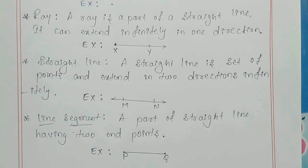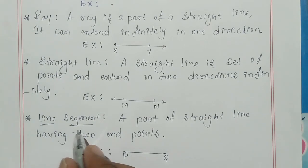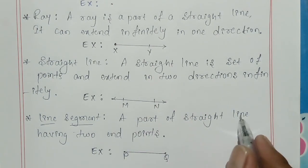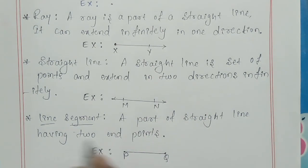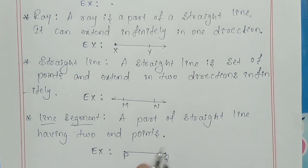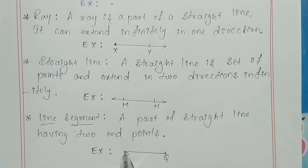Next I will explain line segment. A line segment is a part of a straight line having two end points. This is the line segment — it is a part of a straight line containing two end points: one is P and one is Q.